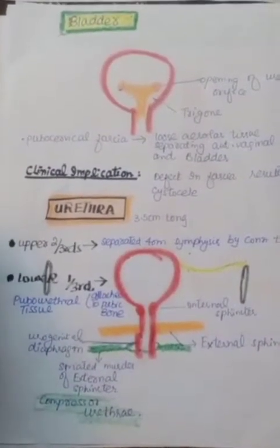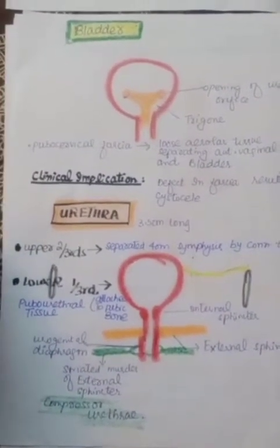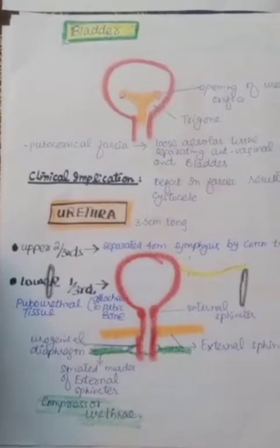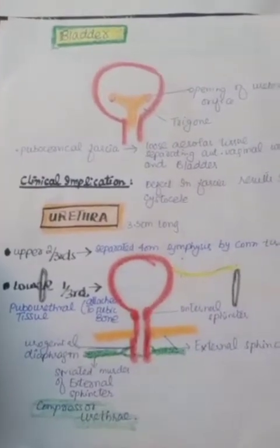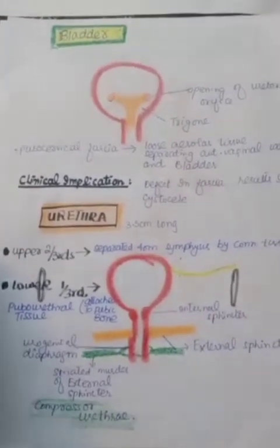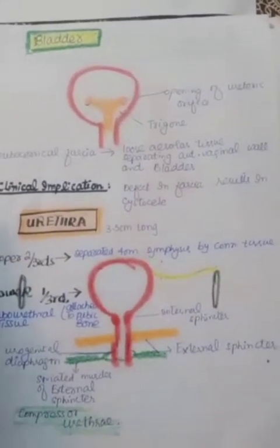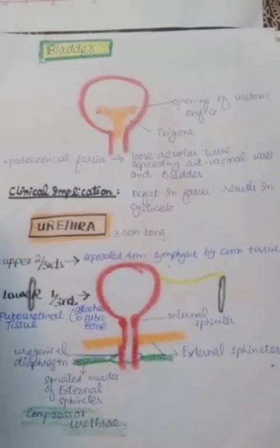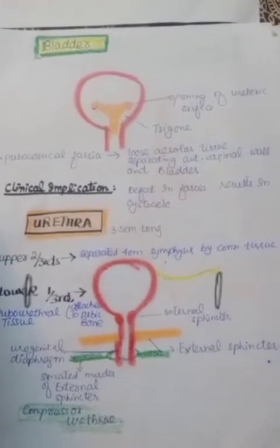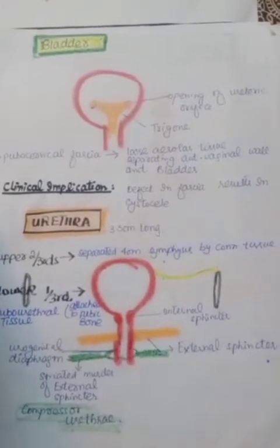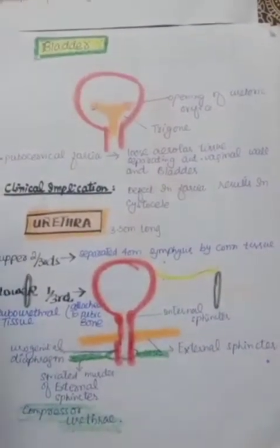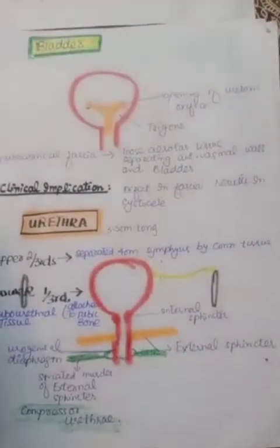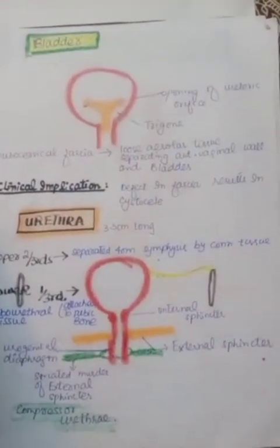Moving towards the next structure, we will discuss the bladder and the urethra. The bladder is a dome-shaped structure and it has the opening of the ureteric orifice at the two apex of the trigone. The trigone is a structure present in the posterior wall.